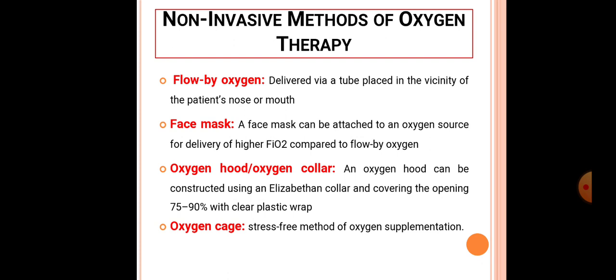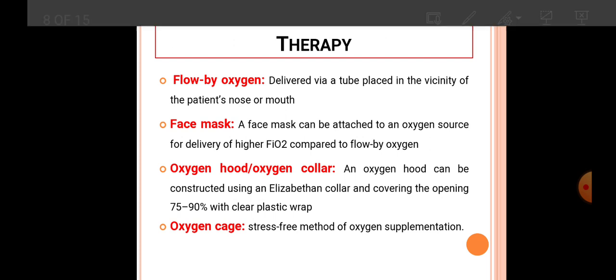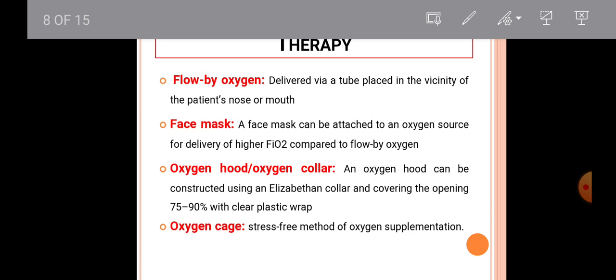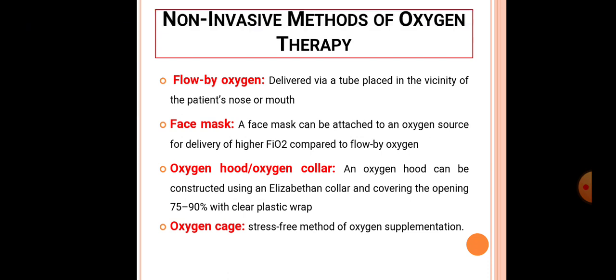Face mask: A face mask can be attached to an oxygen source for delivery of higher oxygen compared to flow-by oxygen. This close-fitting mask is held about the animal's face or muzzle. Oxygen collar: An oxygen hood can be constructed using an Elizabethan collar, covering the opening 75 to 90 percent with clear plastic wrap. Oxygen cage: A stress-free method of oxygen supplementation.